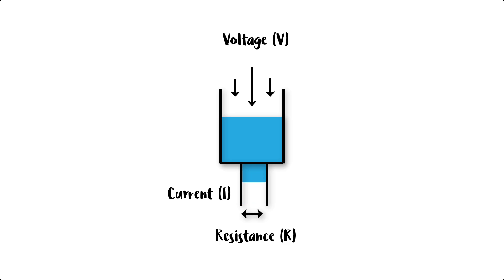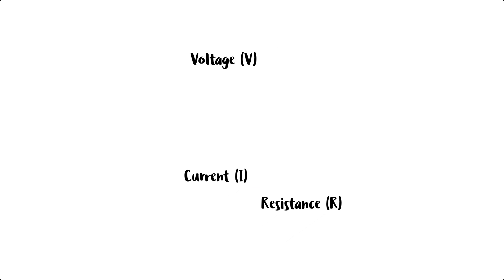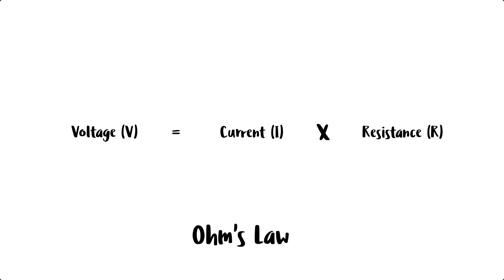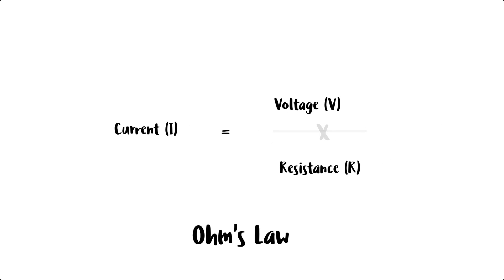Ohm's law describes this relationship between current, voltage, and resistance. It says that the voltage in a circuit is equal to the current times the resistance. Or, current is equal to voltage divided by resistance, and resistance is equal to voltage divided by current.